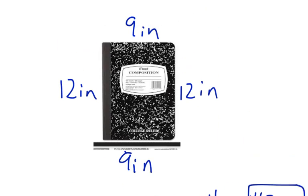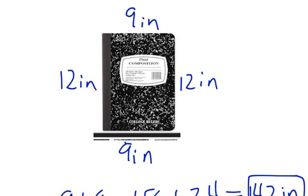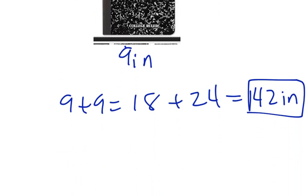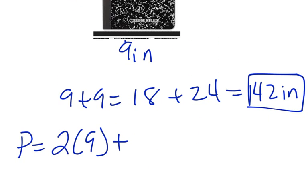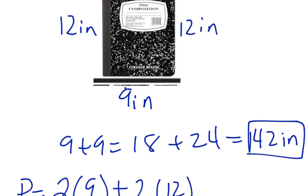Another thing that you can do, because since both of these two sides are equal, you can do P equals, and I forgot to do that, P equals 2 times 9. Because we do have 2 sides that are 9 inches. And then we do the other one, 2 times 12. Because those two sides are 12 inches.